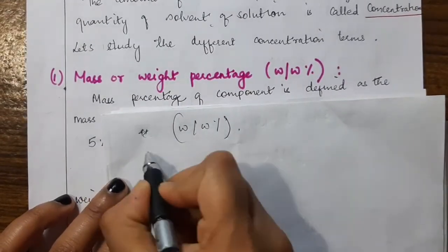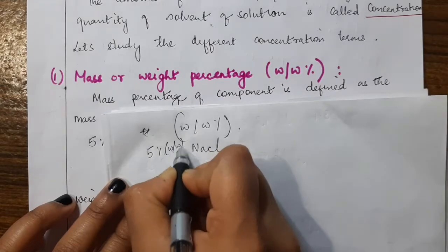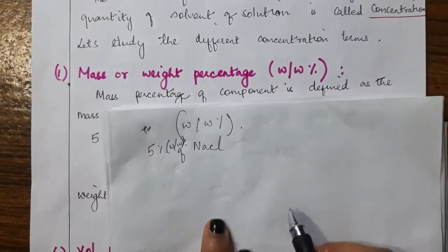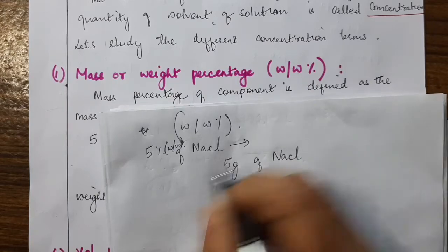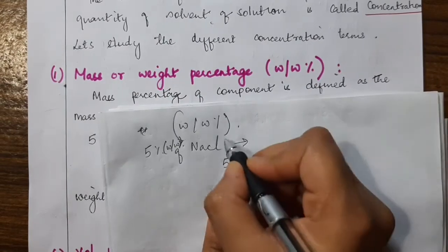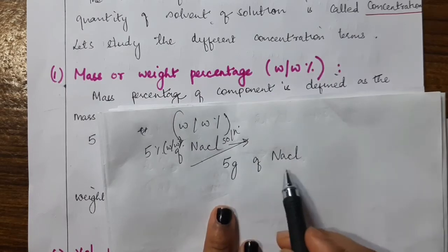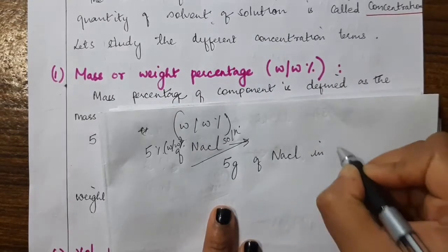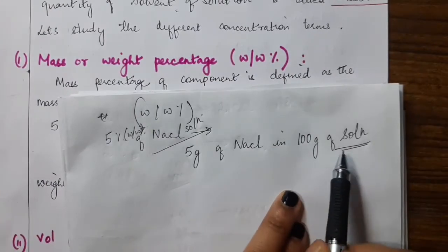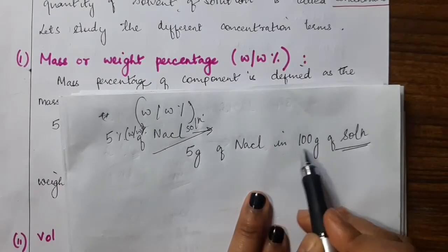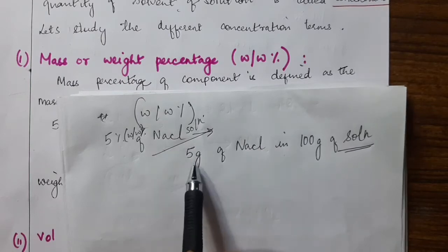Suppose you are given 5% W/W of NaCl solution. This simply means 5 grams of NaCl in 100 grams of solution. Note the term here is solution, not solvent. So 5% weight by weight of NaCl means 5 grams of NaCl in 100 grams of solution. If total solution is 100 grams and NaCl is 5 grams, then the amount of water is 95 grams.